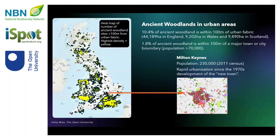By comparing land cover maps with data from the ancient woodland inventory, I found that just over 10 percent of the UK's ancient woodland is within 100 meters of urban fabric, with 1.8 percent being near a major town or city.